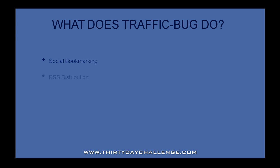The next thing TrafficBug does is RSS distribution. RSS distribution is a great way to get your site indexed faster, to help with your search engine rankings, and it can also provide a little bit of natural traffic as well. With your blogs that you set up with WordPress Direct, you guys have a special URL for your RSS feed. And when you plug that into TrafficBug, it does all the work for you and takes that URL and submits it to all the major RSS aggregators. This is a very powerful feature.